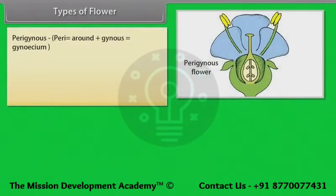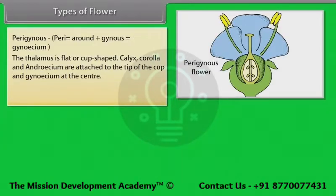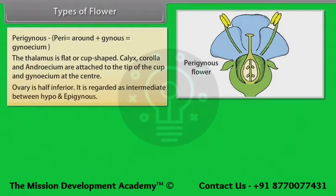In a Perigynous flower, the thalamus is flat or cup-shaped. Calyx, corolla and androecium are attached to the tip of the cup, and the gynoecium is at the center. The ovary is half inferior. It is regarded as intermediate between hypogynous and epigynous.